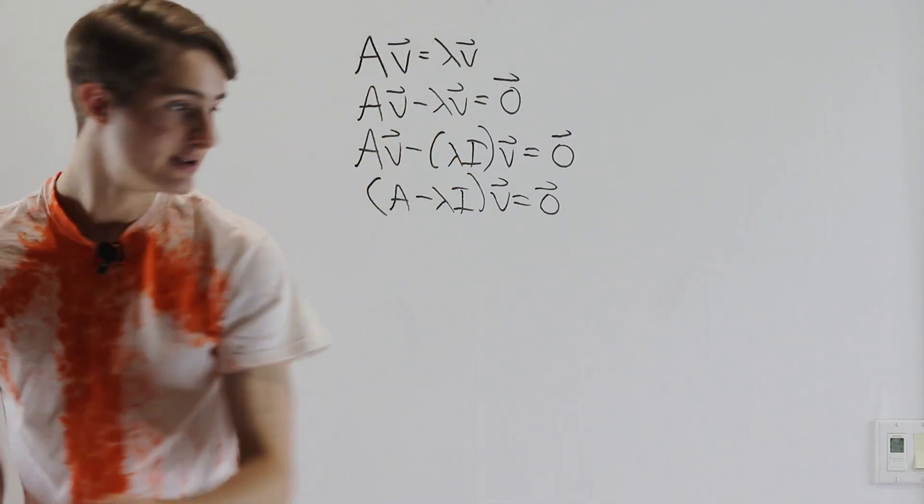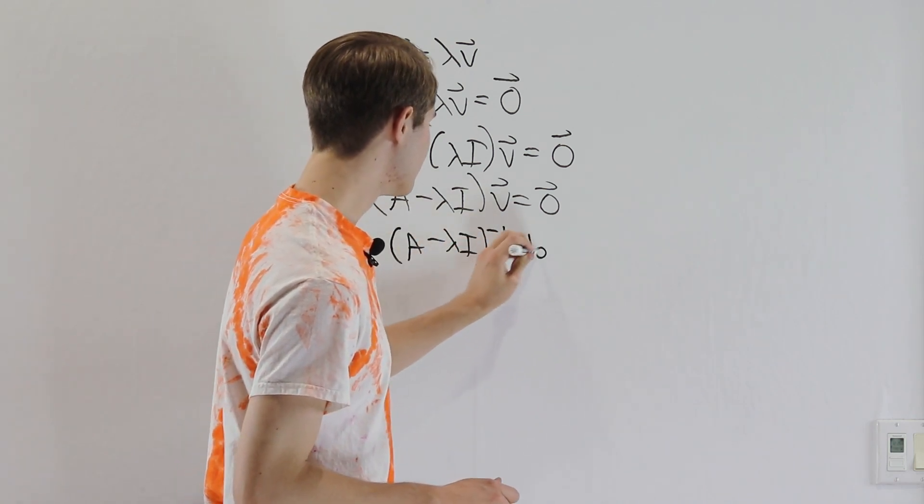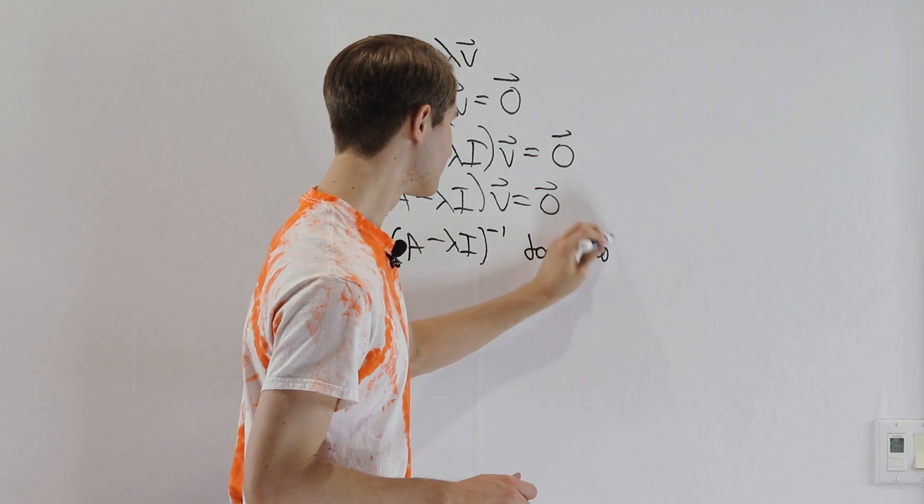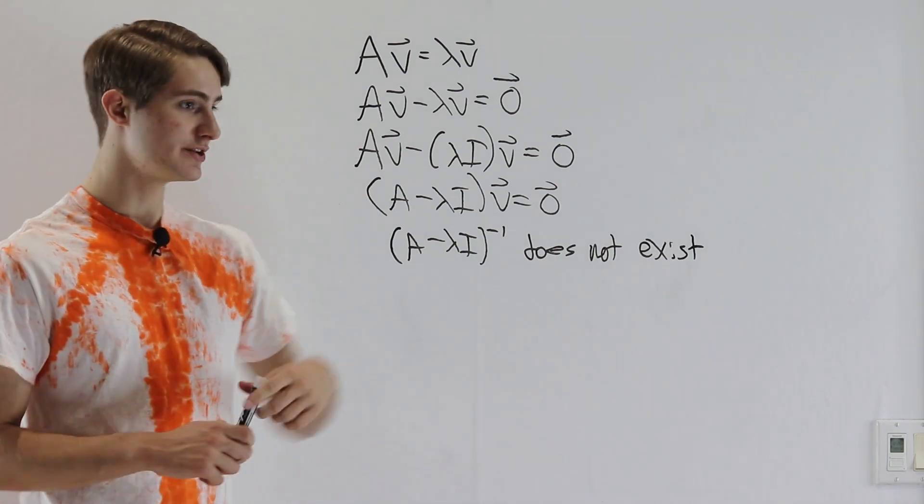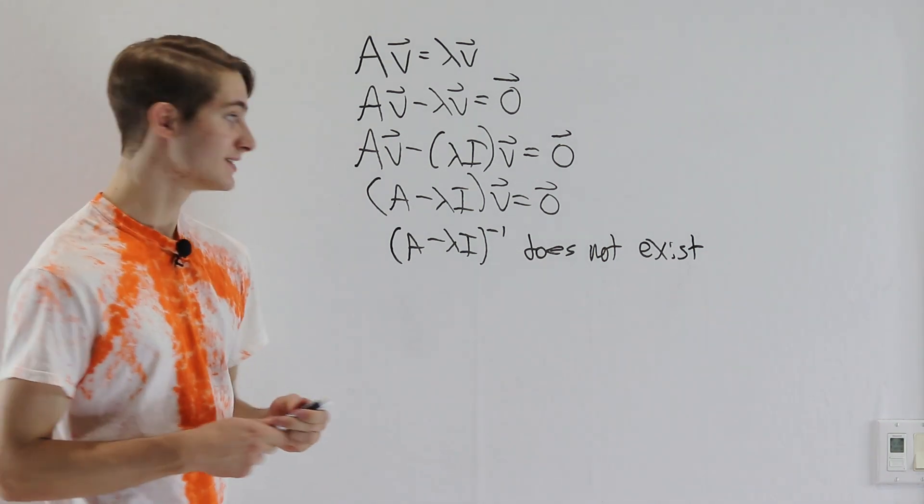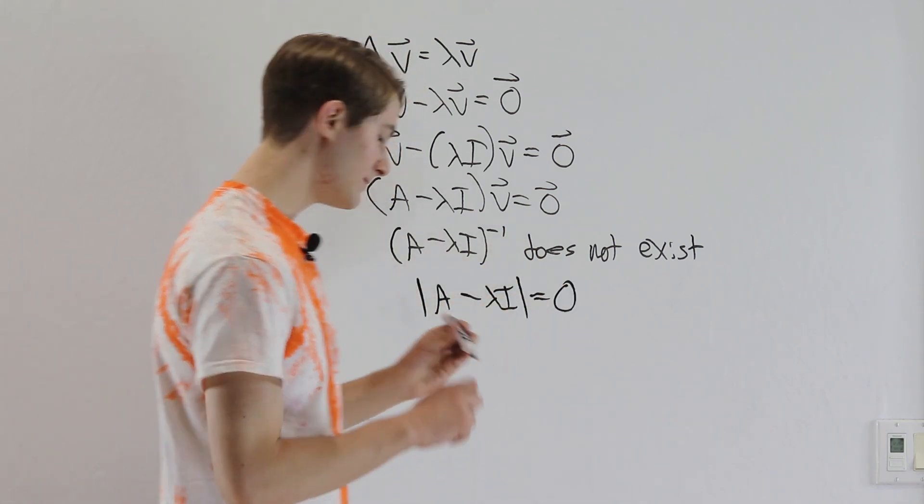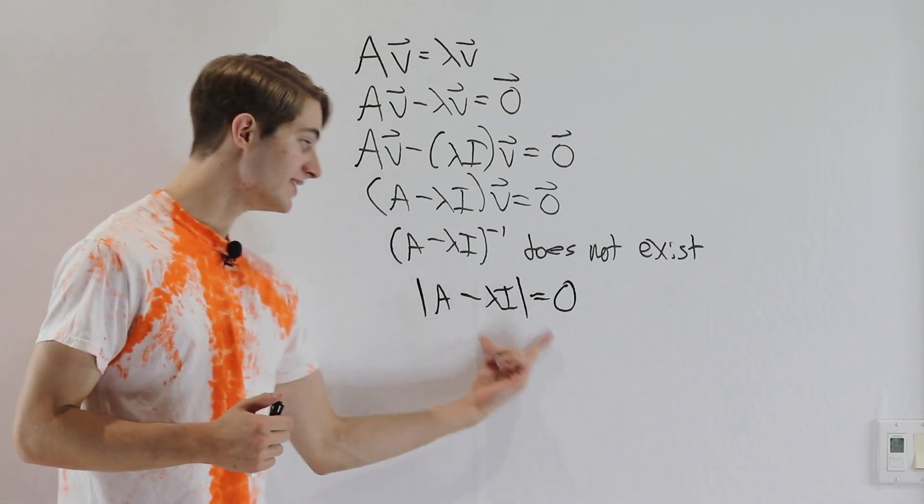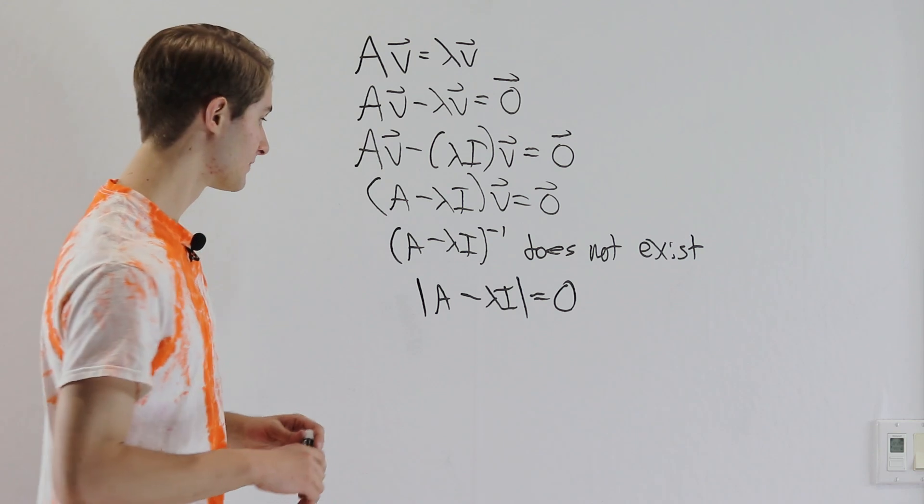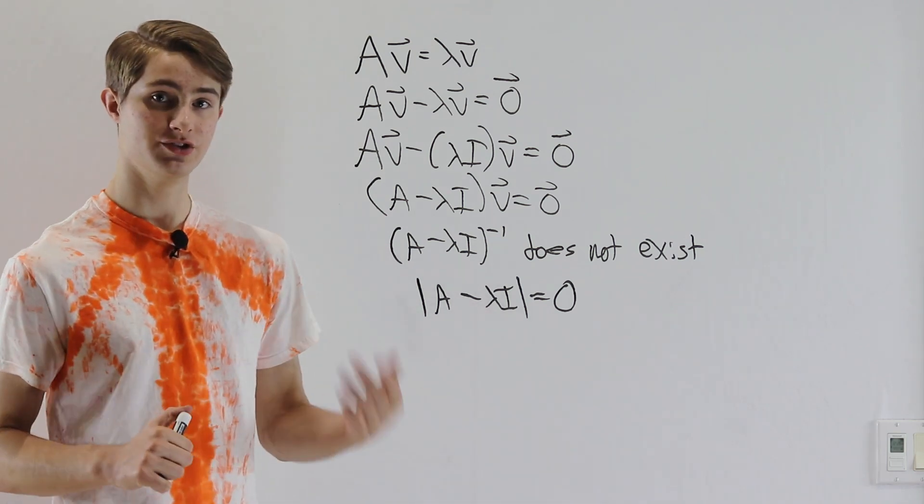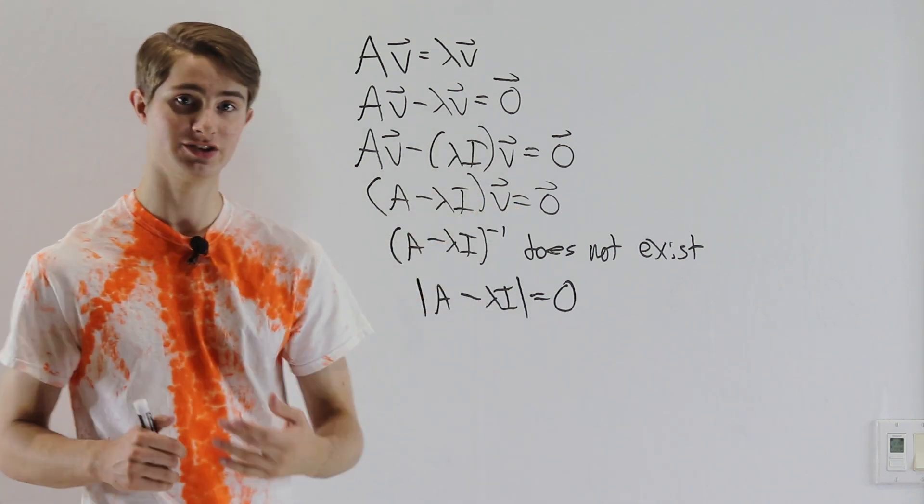So we need to have, in fact, that A minus lambda I inverse does not exist. So how do we make sure that that's true? Well, if you look at my last video on determinants, link in the description, we talked about the fact that if the determinant of a matrix is equal to 0, then that matrix does not have an inverse. So in fact, this is how we're going to figure out the values of lambda that work for our equation. We're going to start by looking at the determinant, because if it equals 0, then we know that we don't have an inverse, and therefore V is not going to be just the 0 vector.